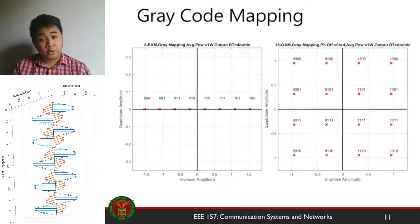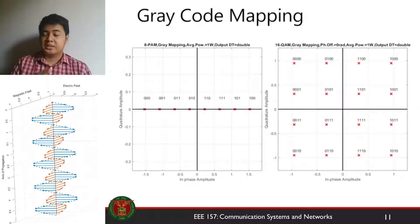Some examples of gray code mapping on your PAM and your QAM are shown on the screen here. As you can see, adjacent symbols have just one bit difference between them.